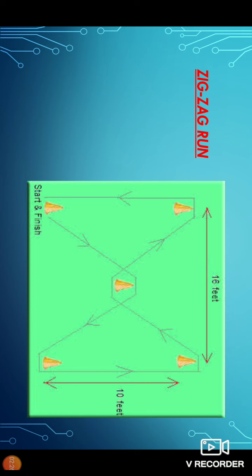Next is zigzag run for measuring agility and speed. By zigzag run we can measure agility and speed. Equipment and material: stopwatch, five obstacles, and 16 into 10 feet course marking.